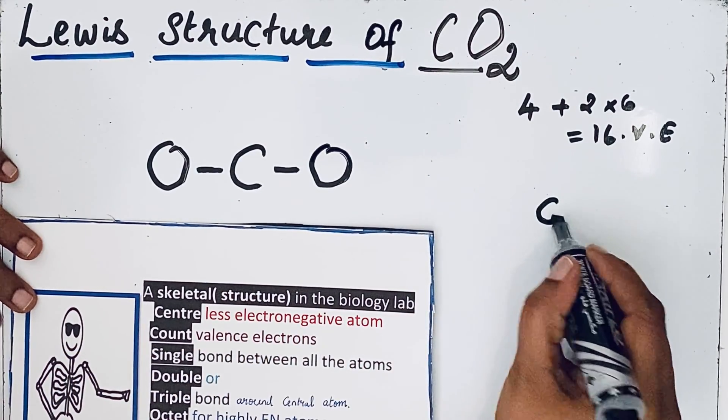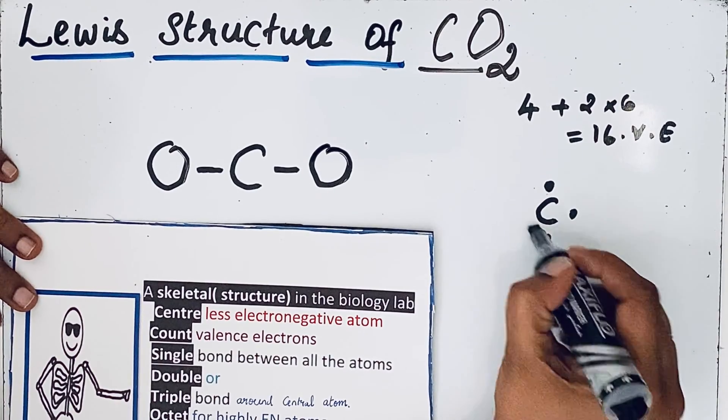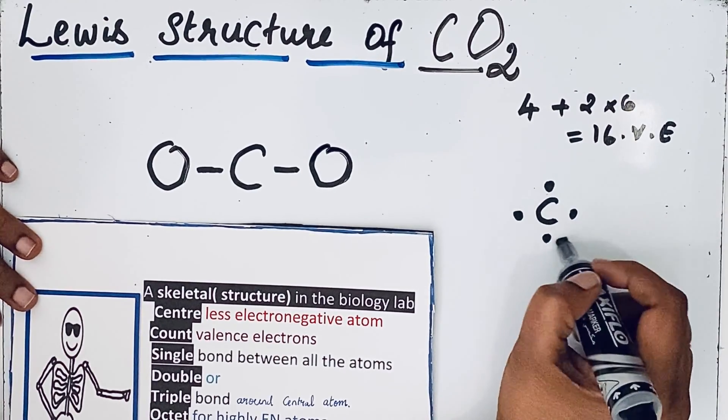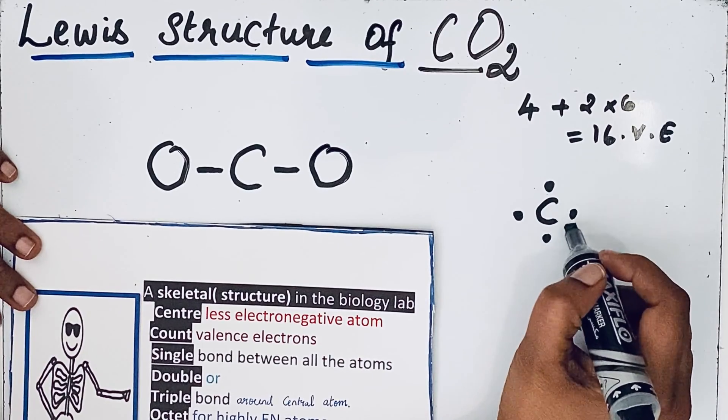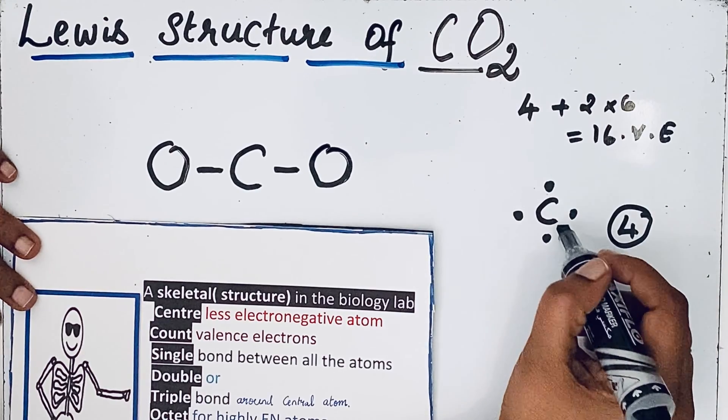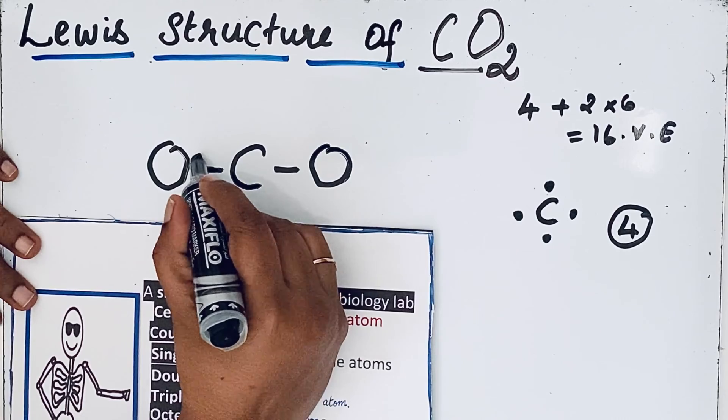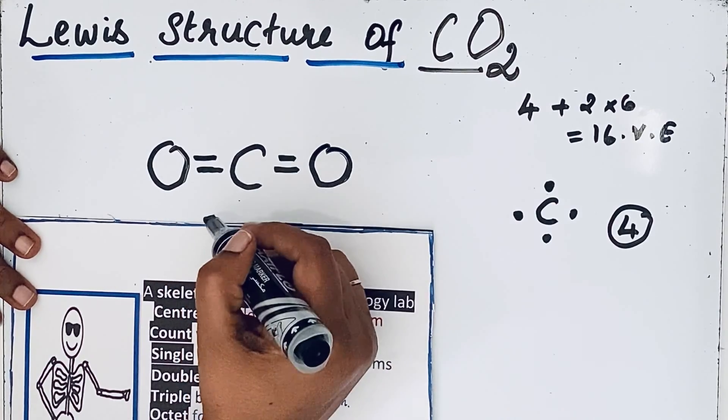Carbon valence electrons: four. So we can write that electron dot structure of carbon atom, one, two, three, four. It means four unpaired electrons are present in carbon. It means four covalent bonds. Already we have that two bonds, so we can draw that two more bonds.